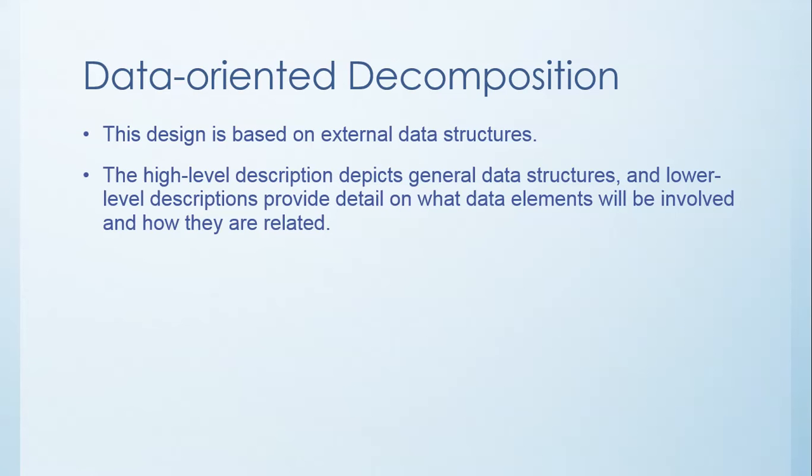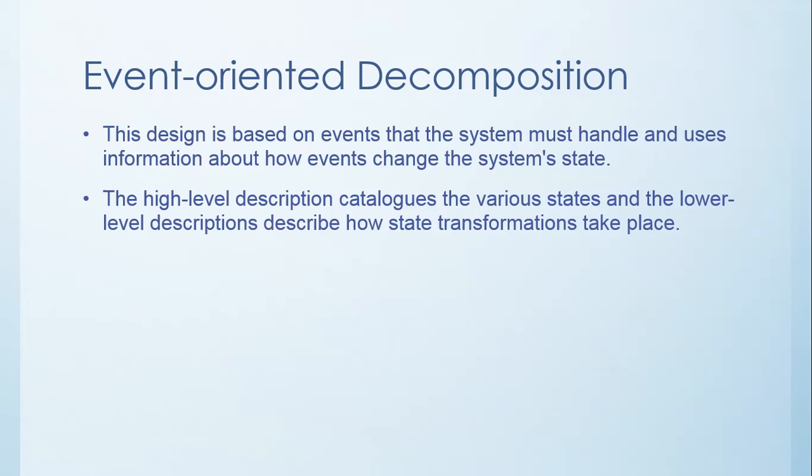The next type of decomposition is event-oriented. This design is based on events that the system must handle and uses information about how events change the system state. The high-level description catalogs all the various states and a lower-level description describes how state transformations take place.